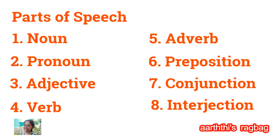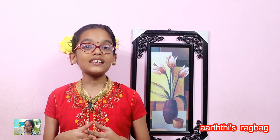In today's video, we are going to see about the different parts of speech in English language. There are 8 parts of speech. They are noun, pronoun, adjective, verb, adverb, preposition, conjunction, and interjection. So these are the 8 parts of speech in English language.